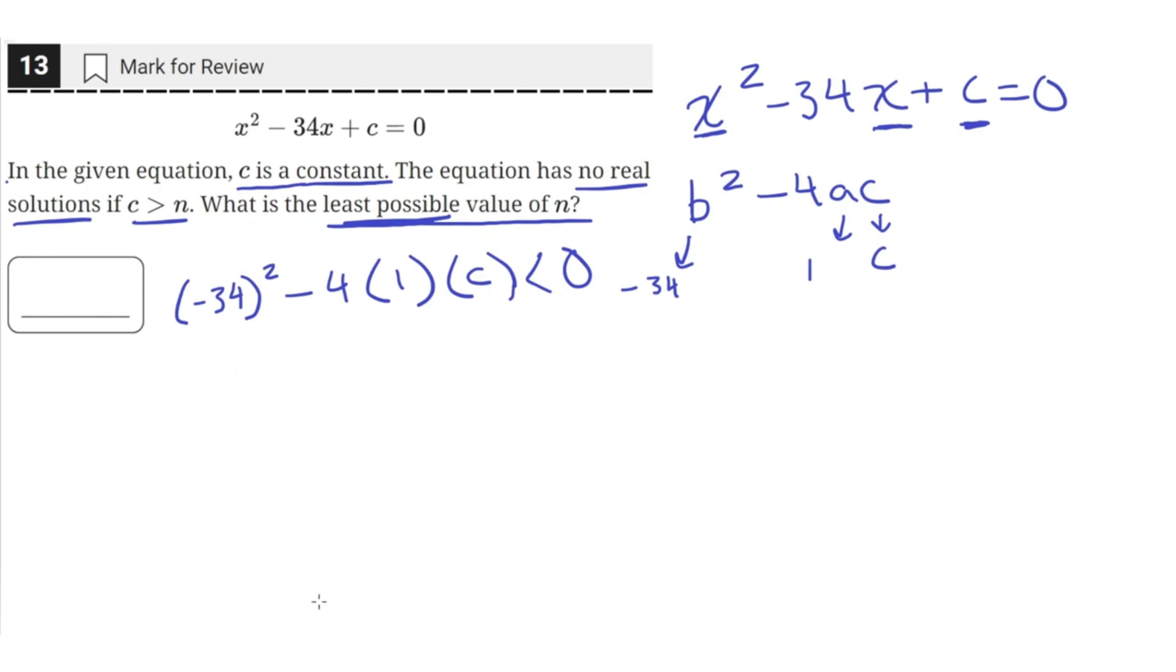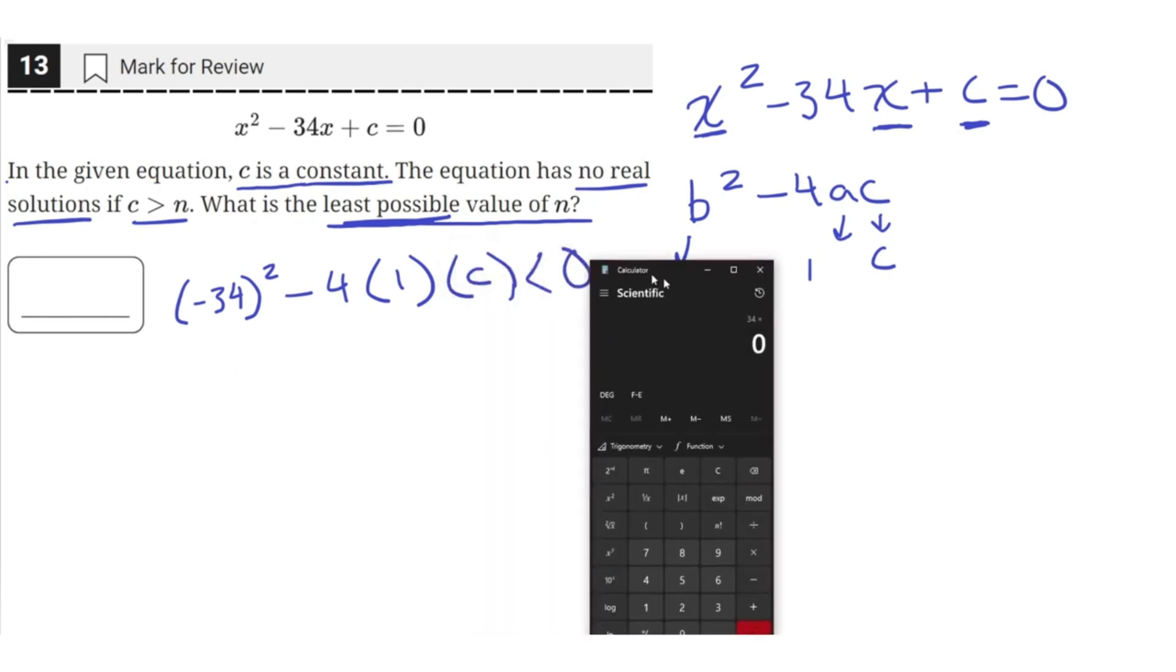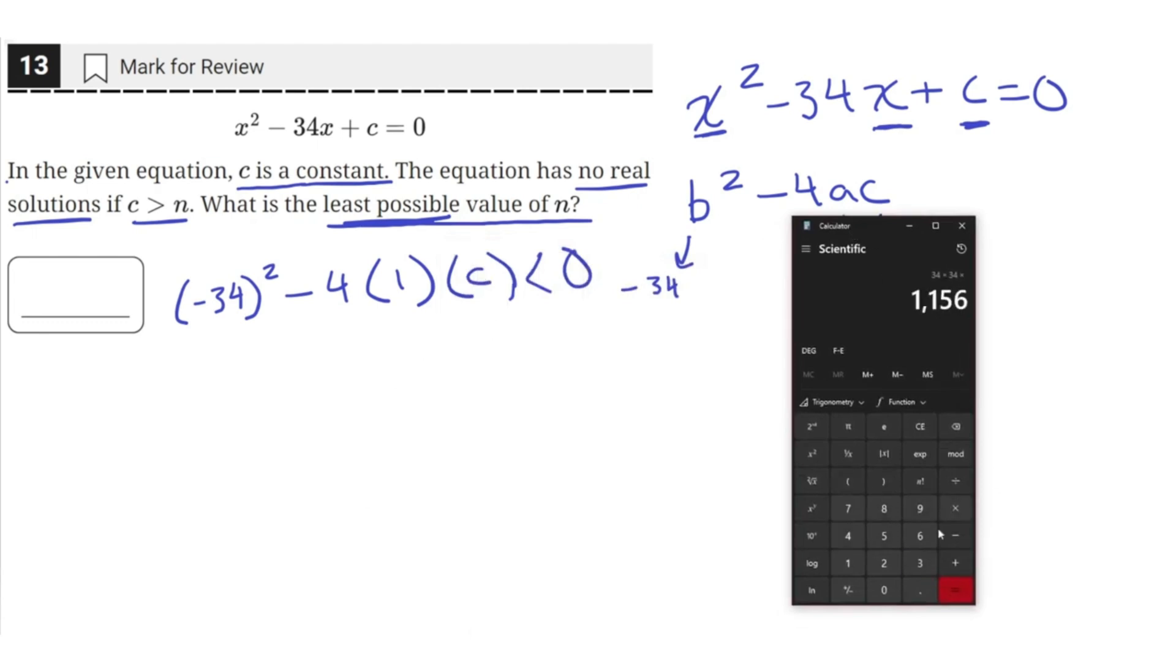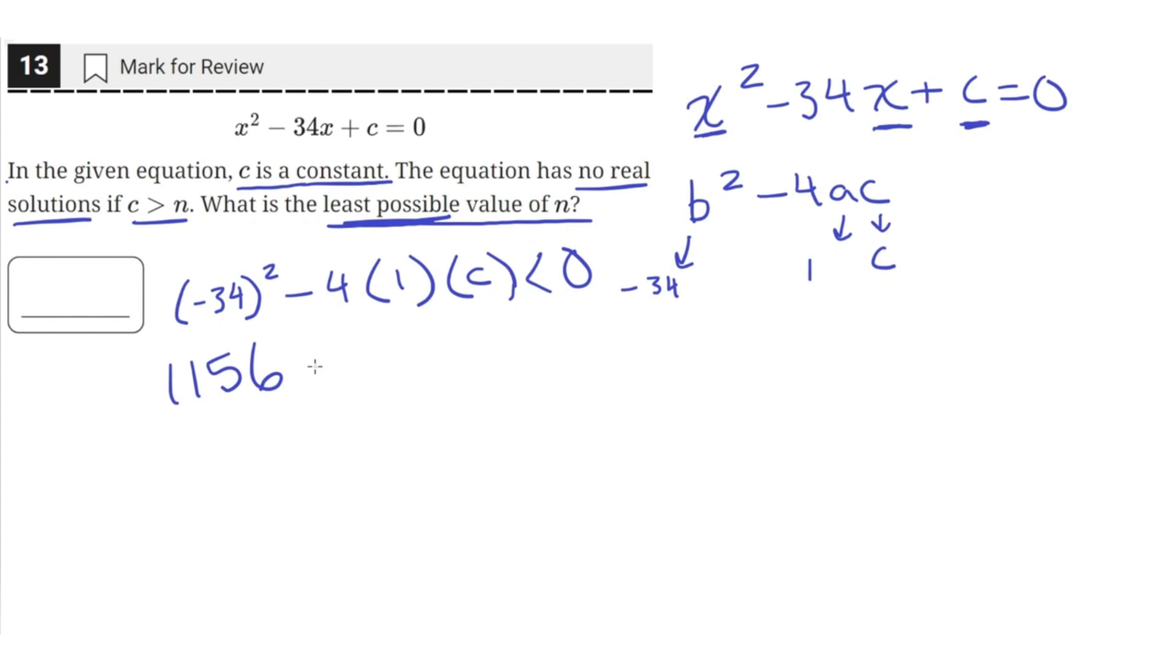So now let's simplify this inequality. Negative 34 squared is just equal to positive 34 times 34, which is just equal to 1,156 minus 4c. We just distributed the negative 4. This has to be less than zero.